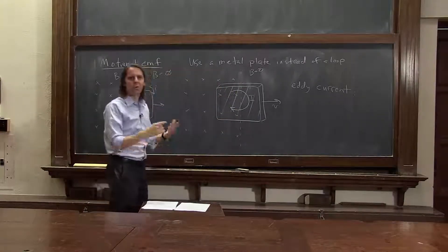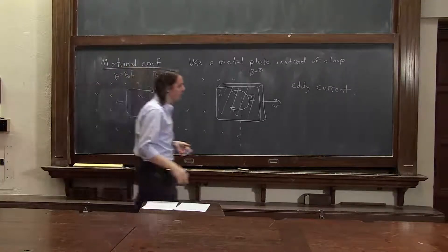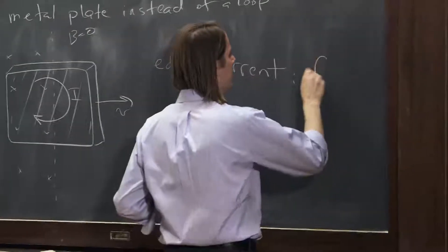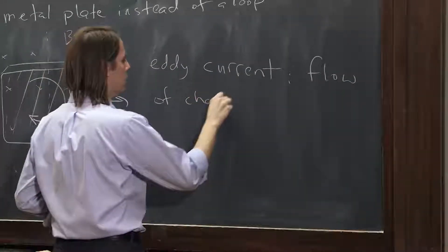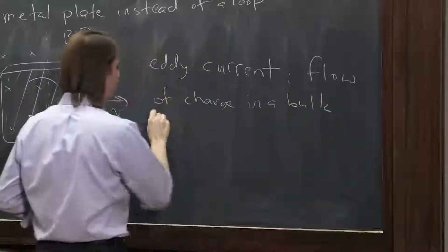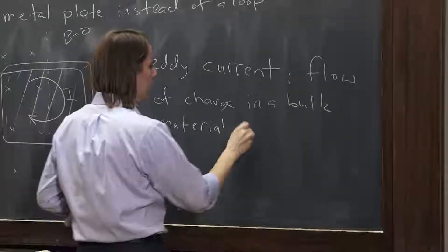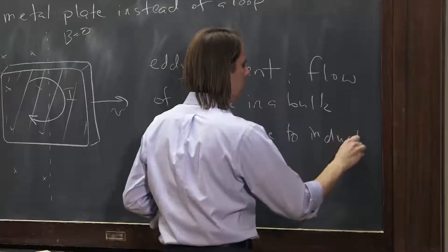It just swirls in a circle sort of all over the place. So that's where the name eddy current comes from. It's the flow of charge in a bulk material, due to induction.